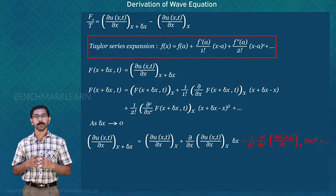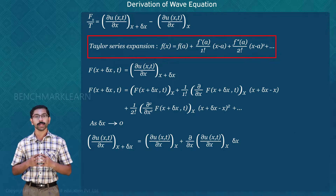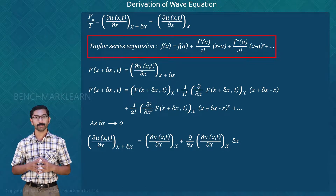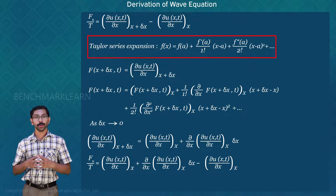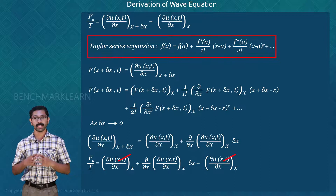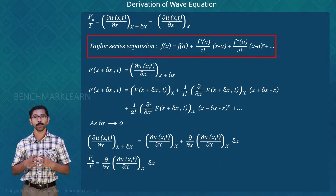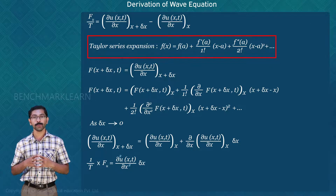As Δx → 0, higher powers of Δx tend to zero, so we neglect all terms containing higher powers of Δx. Thus ∂u(x,t)/∂x at (x + Δx) ≈ ∂u(x,t)/∂x|ₓ + [∂/∂x · (∂u(x,t)/∂x)|ₓ] · Δx. Substituting into the net force expression, Fu/T = [∂u(x,t)/∂x|ₓ + ∂²u(x,t)/∂x² · Δx] − ∂u(x,t)/∂x|ₓ. The first and third terms cancel, giving Fu/T = ∂²u(x,t)/∂x² · Δx, or (1/T)·Fu = ∂²u(x,t)/∂x² · Δx.